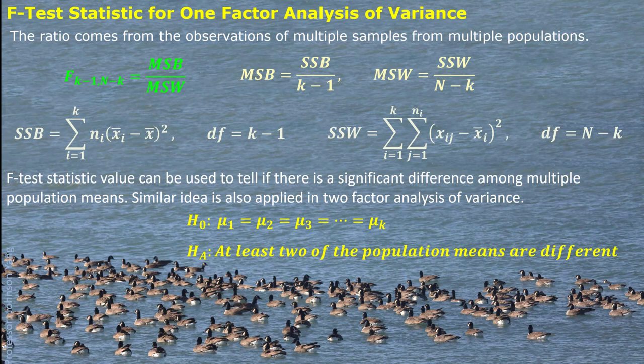A similar idea can also be applied in two-factor analysis of variance. By now, we should have a whole picture about many different kinds of sampling distribution models applied for doing statistical analysis. We apply them by calculating test statistic values from sample data to tell about the corresponding population parameters or population distribution.